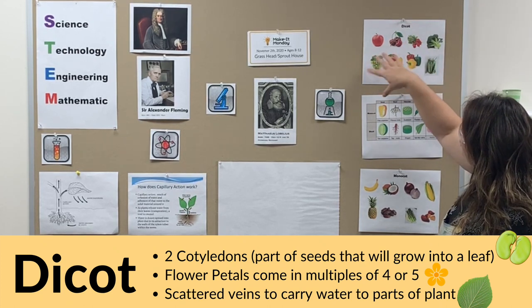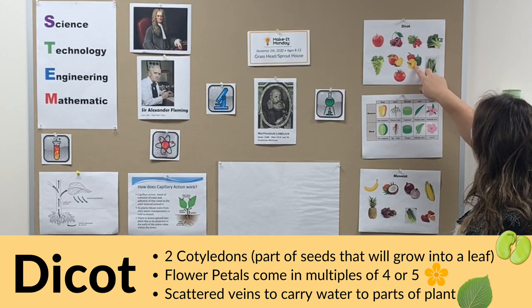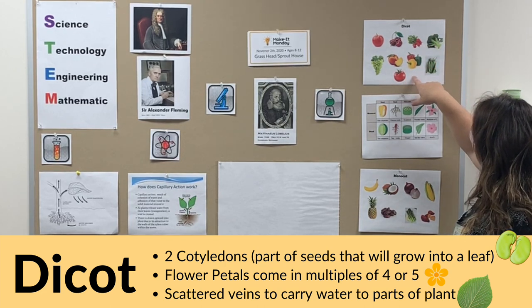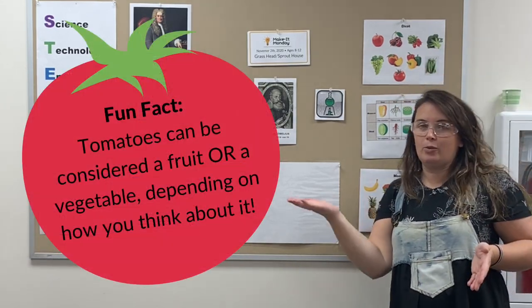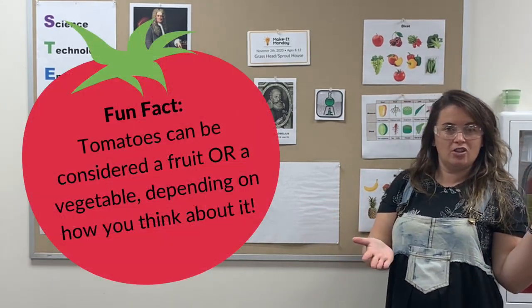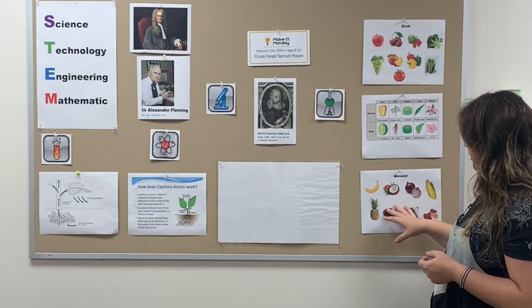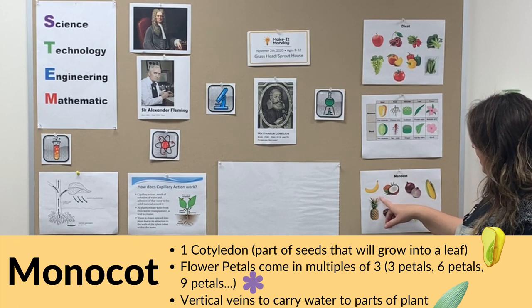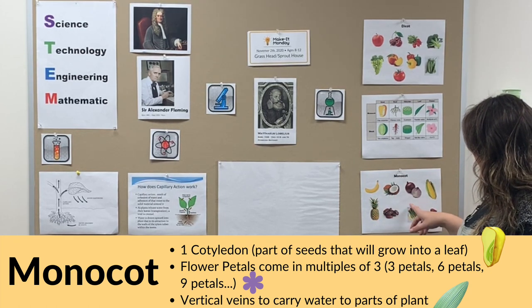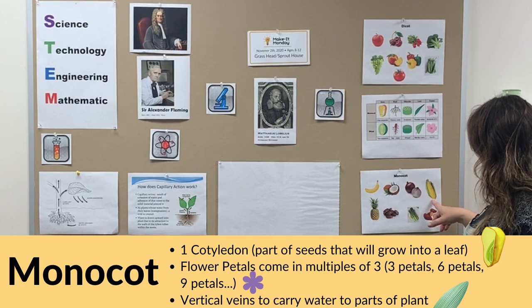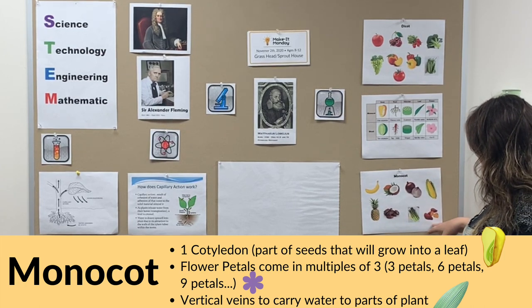And then vegetables are radish, broccoli, peppers, beans — and I kind of put tomato in the middle because is tomato a fruit or a vegetable? What do you think? The monocots are bananas, coconuts, pineapple, dates are vegetables, onions, corn, asparagus, and yams.